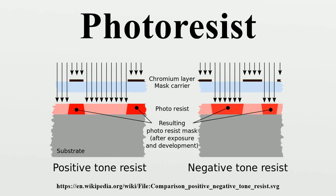A photoresist is a light-sensitive material used in several industrial processes, such as photolithography and photoengraving, to form a patterned coating on a surface.